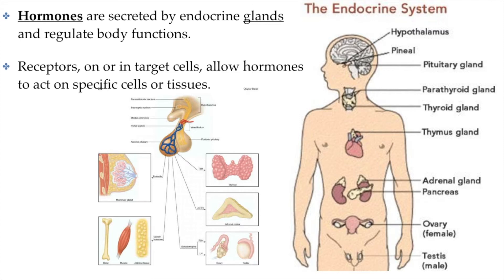These cells are called target cells, and these are the cells that allow the hormones to act within the tissues themselves. For example, we have a gland called the pituitary gland that is found in our brain, and the pituitary gland produces many different hormones, one of them being growth hormone. Growth hormone stimulates growth and is produced throughout our childhood and during growth spurts in vast quantities, then after puberty its production dwindles, which is why we stop growing at some point.